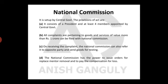The jurisdiction of the National Commission extends to any case where the compensation amount exceeds rupees one crore. If the price of the product is more than one crore, the consumer must directly file the complaint with the National Commission. It has the power to issue orders for replacement, removal, and payment of compensation. If not resolved here, the case goes to the Supreme Court within 30 days — a very rare matter.